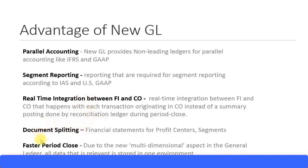Another advantage is document splitting. Based on document splitting, you get all the information — basically the balance sheet information — flowing on to profit centers and segments. We will look at document splitting in the next presentation, where we discuss in detail the different types of document splitting and how the system splits those line items and posts to profit centers and segments. Because of document splitting, you are able to make profit center-wise and segment-wise reporting.